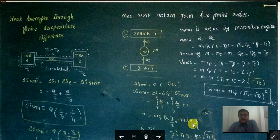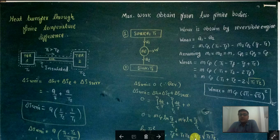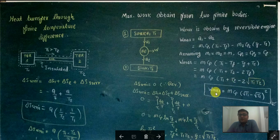The integration gives M·Cp·ln(TF/T1) plus M·Cp·ln(TF/T2). The sum of logarithms equals the log of the product, giving M·Cp·ln(TF² / T1·T2) = 0. Since the natural log of 1 is 0, we get TF² = T1·T2, so TF = sqrt(T1·T2). Substituting this TF value into the work equation gives W = M·Cp·(T1 + T2 minus 2·sqrt(T1·T2)). Using the identity (a minus b)² = a² + b² minus 2ab, the maximum work is W_max = M·Cp·(sqrt(T1) minus sqrt(T2))².